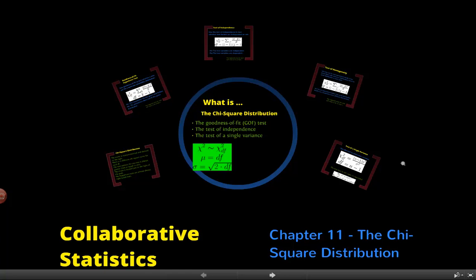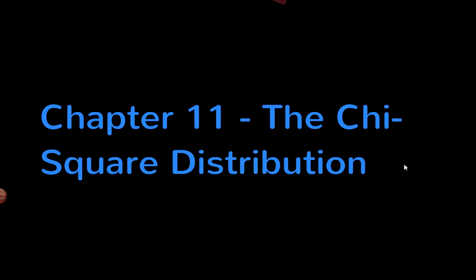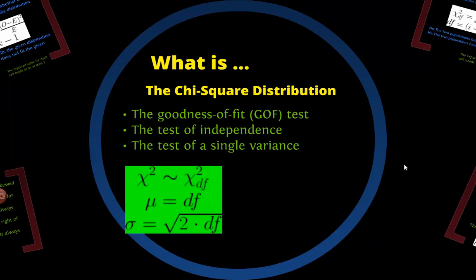Good morning and welcome to Collaborative Statistics. Today we'll be looking at chapter 11, the chi-square distribution. This one is a little different from the previous ones — we're still going to be doing hypothesis testing, but this is different from where we looked at means and proportions and standard deviations to see if they're equal to each other. This is one where we're going to be looking at tables.